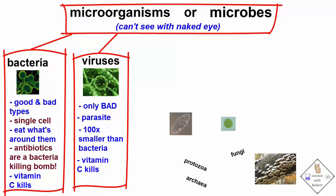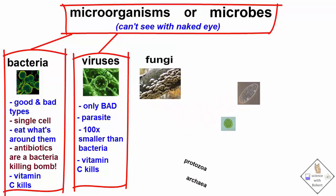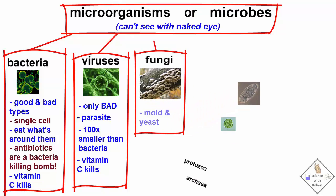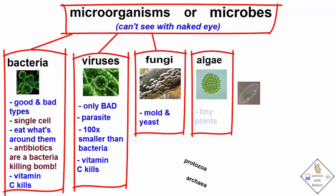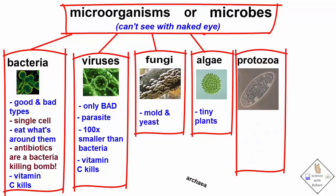The remaining types of microbes include fungi like yeast and molds, algae which are really tiny plants, and protozoa. Protozoans are found everywhere including our soil, air, water, and are multicellular.